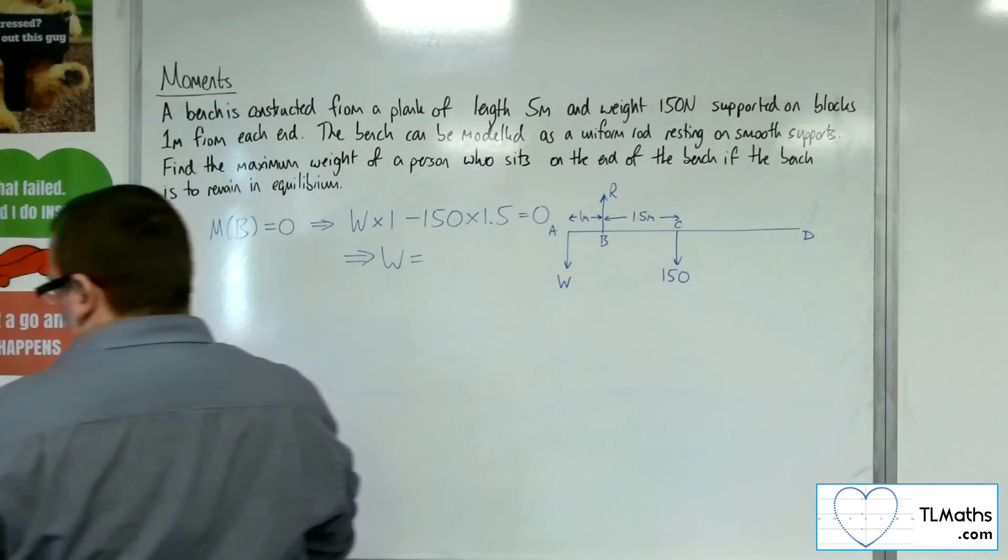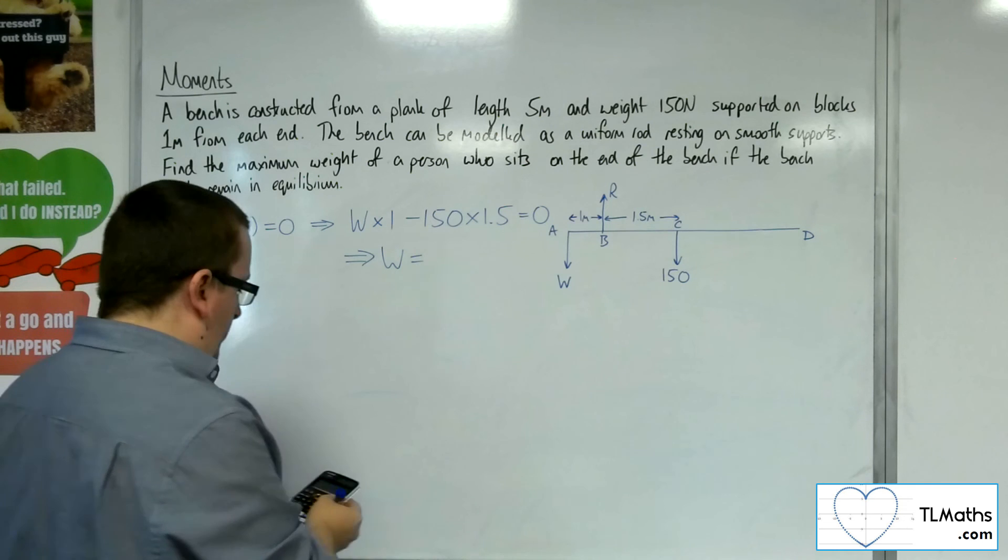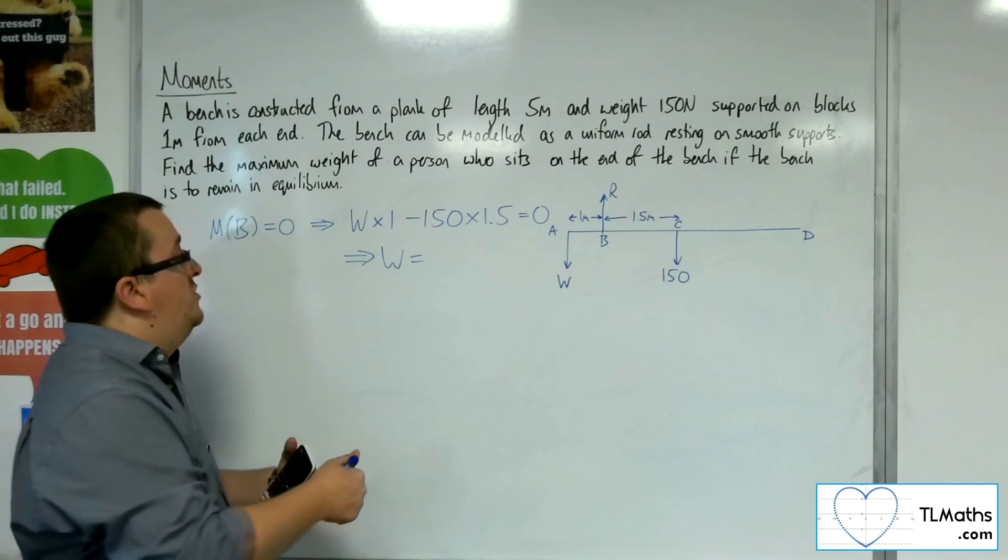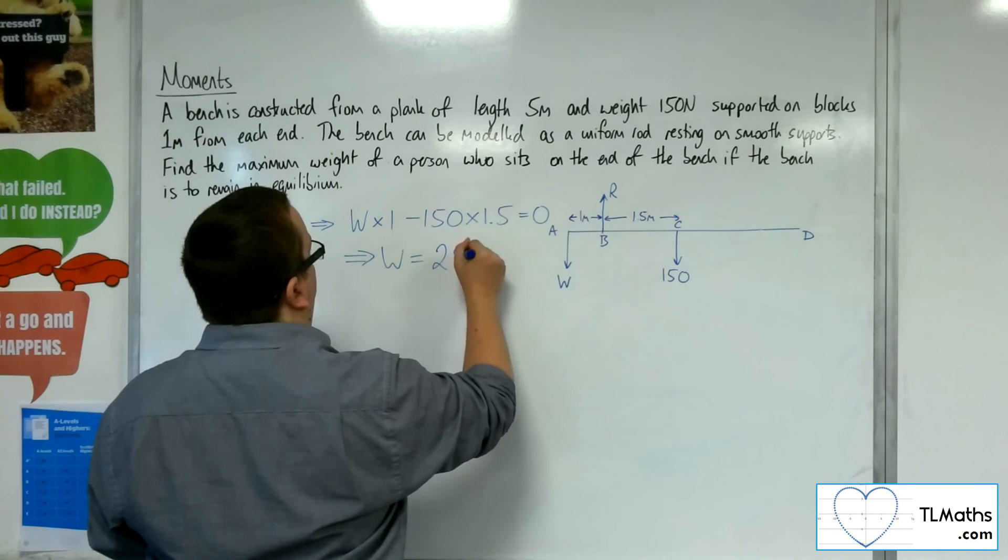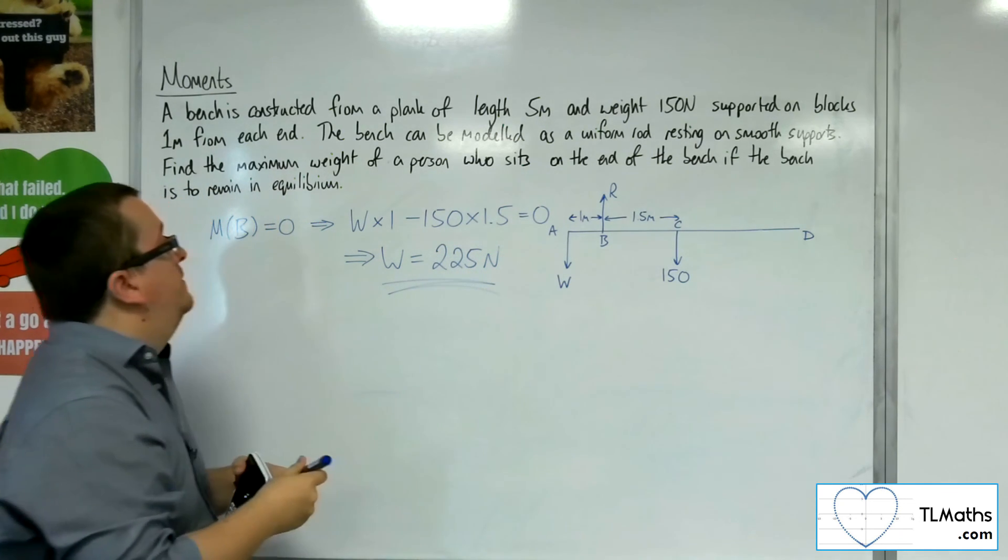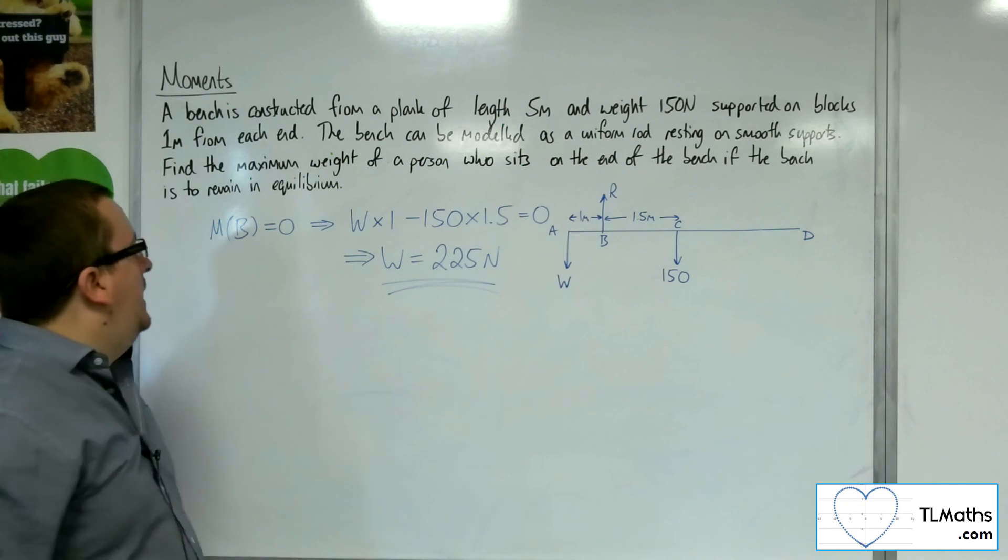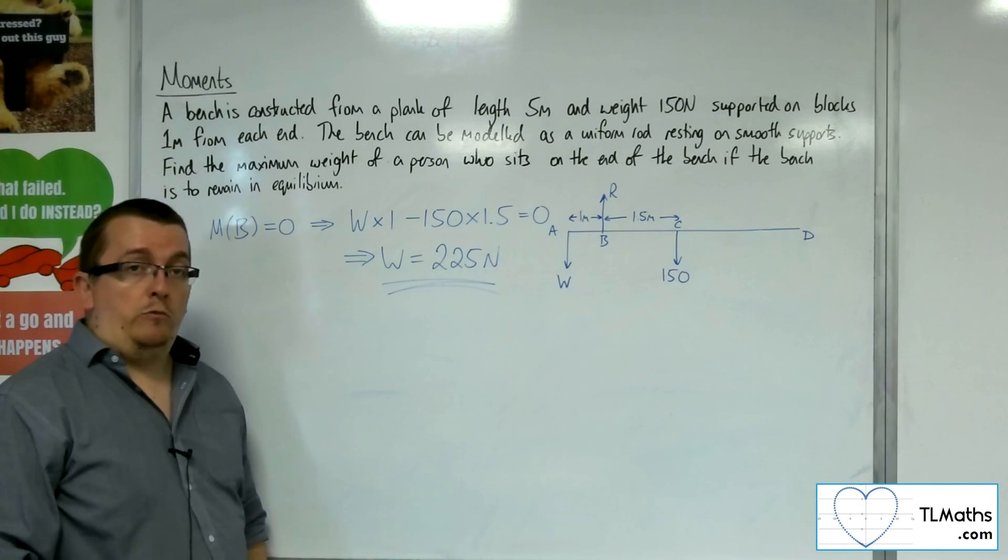The weight is 150 times the 1.5, which is 225. So, that is the maximum weight of a person who sits on the end of the bench, if the bench is to remain in equilibrium.